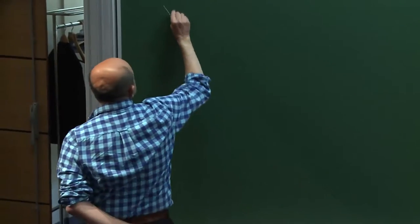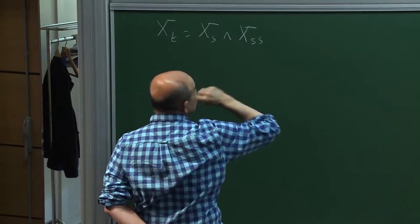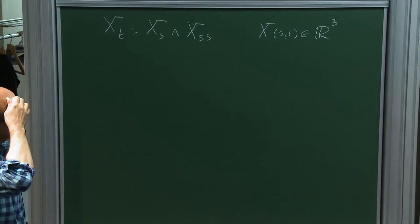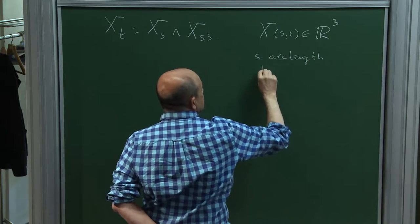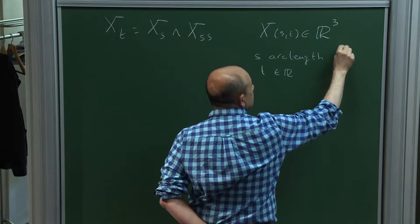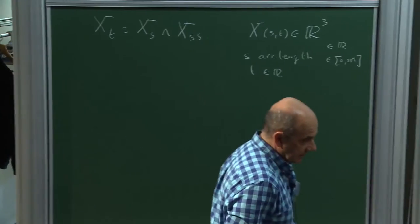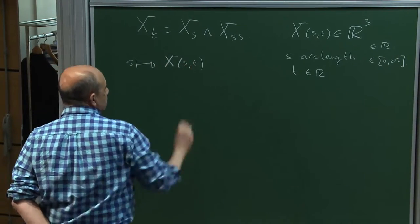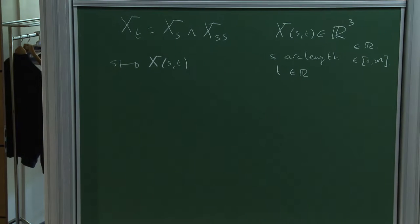The flow is the following. Here X is a vector in R³ and S, as you will see in a minute, is arc length. T is time and this can be either in the continuous case or the periodic case. So for a fixed T, what I have is the map from S to capital X of S,T giving me a curve in R³. I am giving a law of motion of these curves and I should start by saying what is the geometrical meaning.